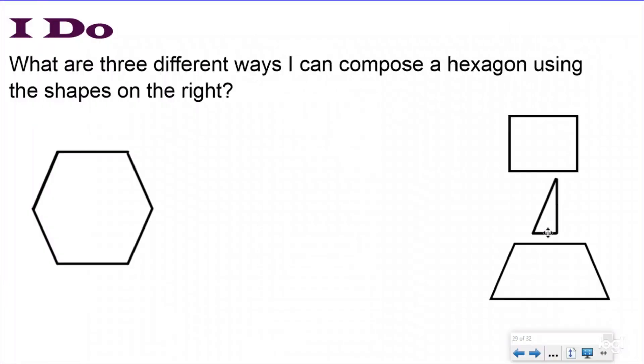My I do problem says what are three different ways I can compose a hexagon using the shapes on the right? The first way I remember from last lesson is by using two trapezoids. You're going to have to flip one of the trapezoids around and that's okay. Here I have made a hexagon using two trapezoids. That's one way I can compose it.